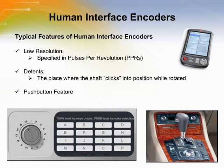The features of the human interface encoders are: they are low resolution, specified in pulses per revolution. They have detents, which allow the operator to feel when the shaft clicks into position as the shaft is rotated. They also have a push button feature that is used to enter or choose menu selections.